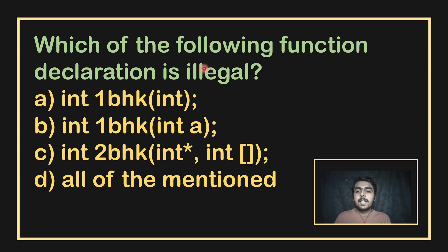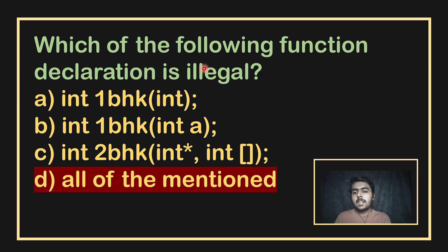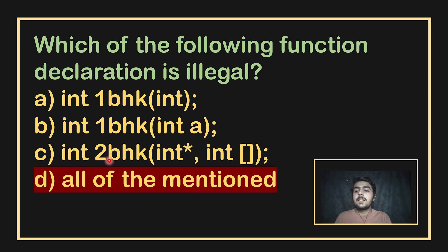Which of the following function declarations is illegal? A declaration is illegal when it breaks an identifier rule — for example, starting with a digit is invalid. Options that start with a special character or a digit are invalid. So identifiers must not start with a digit; those options are errors.